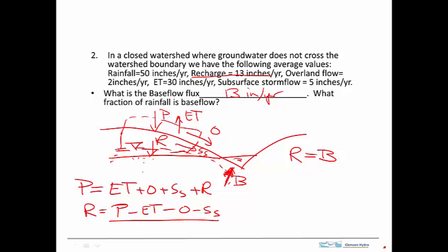Okay, so this problem is really in two parts. The simple way to do it is to just recognize that the base flow is equal to the recharge. But then if we don't have the recharge, then we can calculate it using the other information that's given to us in the problem.